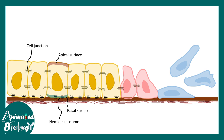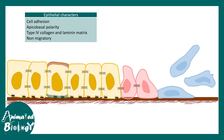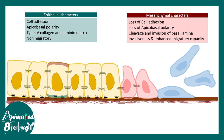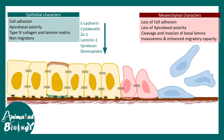In the case of EMT, the epithelial character goes down — there is a loss of cell adhesion and apico-basal polarity, and there are changes in the extracellular matrix. Epithelial cells, which are normally non-migratory, eventually become migratory as they become mesenchymal cells. Mesenchymal cells show loss of adhesions, loss of polarity, and gain of invasiveness and enhanced migratory capacity.